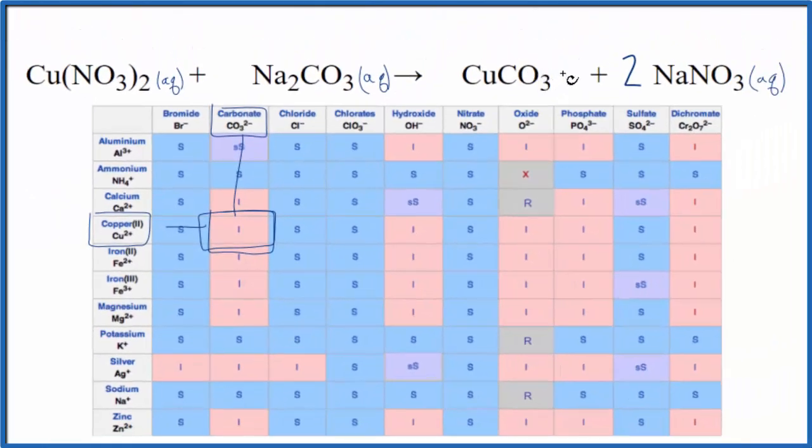That means it'll be a solid. When this reaction happens, it'll be a precipitate. These two will react, and this solid will fall to the bottom of the test tube.